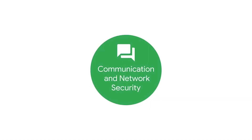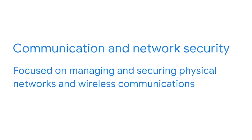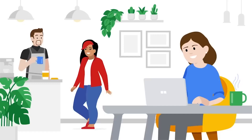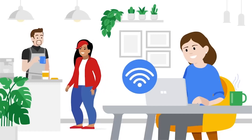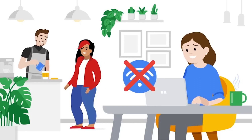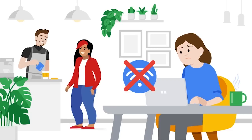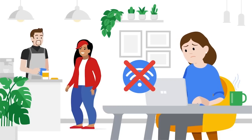The fourth domain is communication and network security, which is mainly focused on managing and securing physical networks and wireless communications. Secure networks keep an organization's data and communications safe, whether on site, in the cloud, or when connecting to services remotely. For example, employees working remotely in public spaces need to be protected from vulnerabilities that can occur when they use insecure Bluetooth connections or public Wi-Fi hotspots. By having security team members remove access to those types of communication channels at the organizational level, employees may be discouraged from practicing insecure behavior that could be exploited by threat actors.